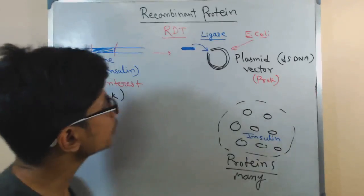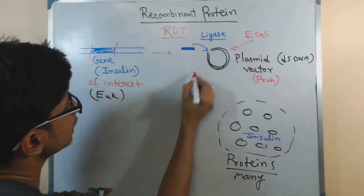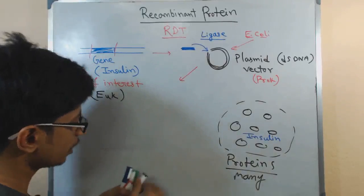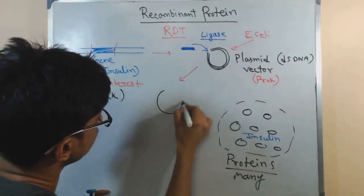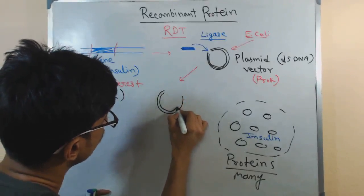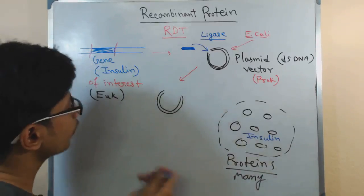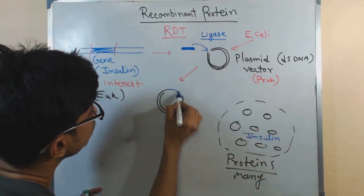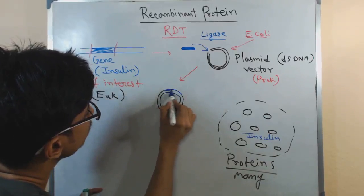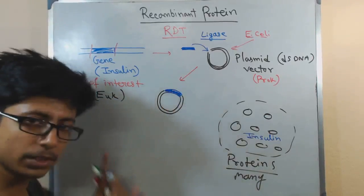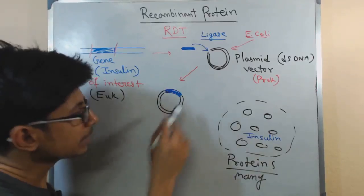After this ligation, what we will get here is a construct of the desired gene in blue color along with the plasmid content.